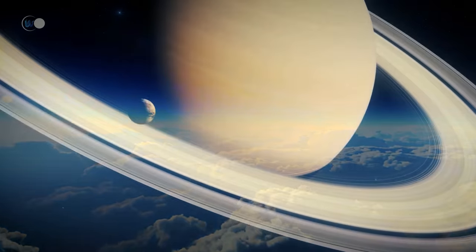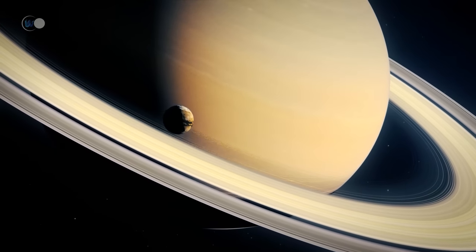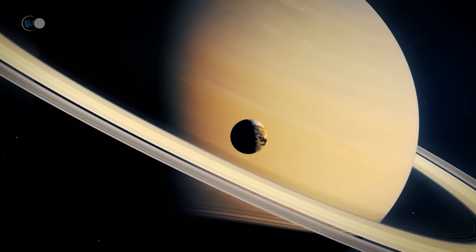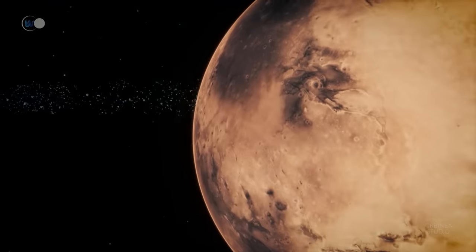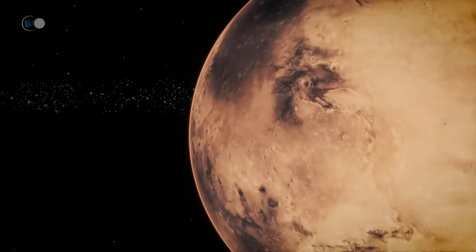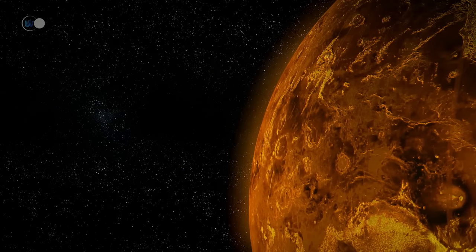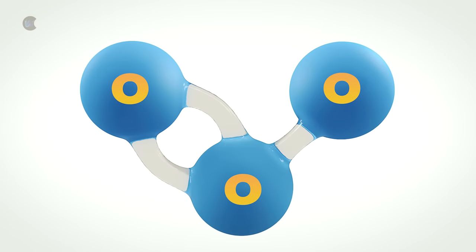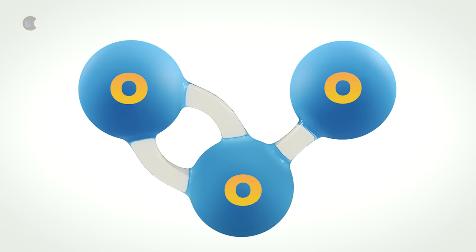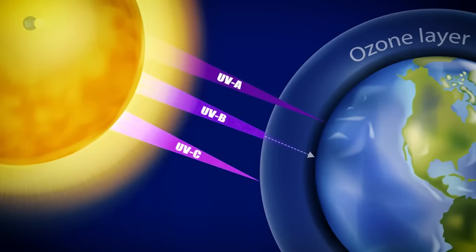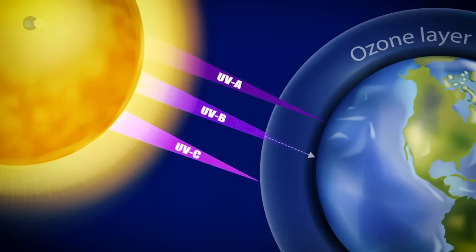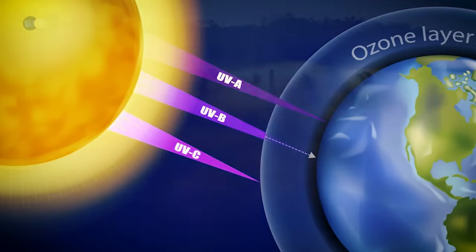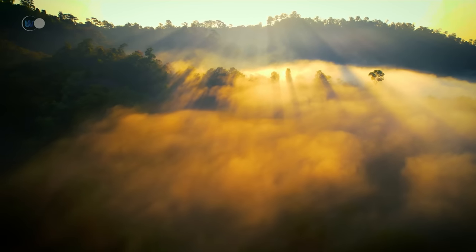In the solar system, the atmosphere most similar to that of the Earth is that of Titan, a moon of Saturn. The atmosphere of Mars is 100 times less dense than that of the Earth, and that of Venus is 100 times more dense. Ozone is a molecule that contains three oxygen atoms. The gas present in the atmosphere absorbs the harmful ultraviolet rays of the sun, allowing life to thrive on the surface.